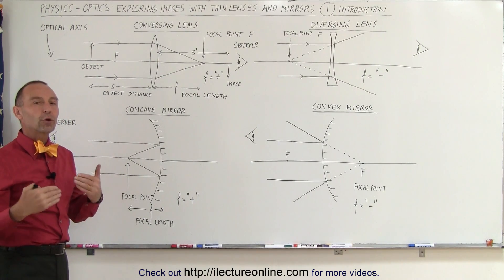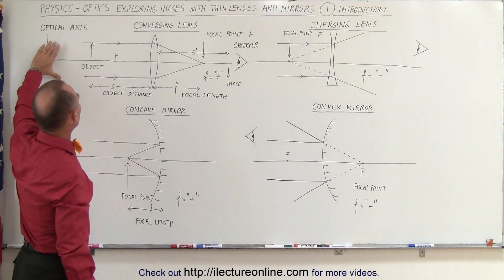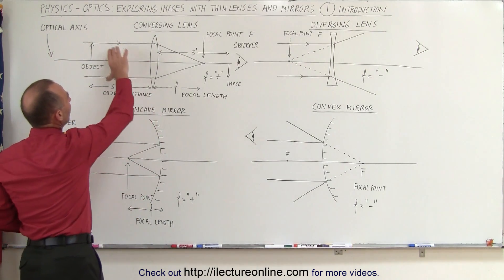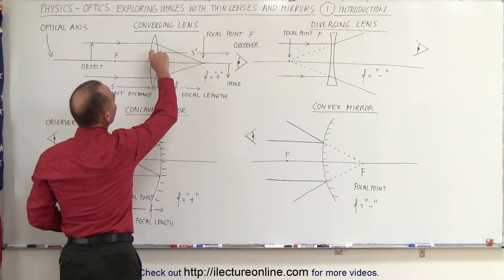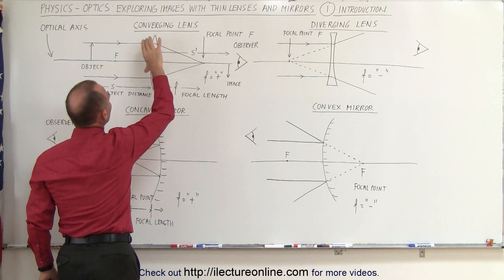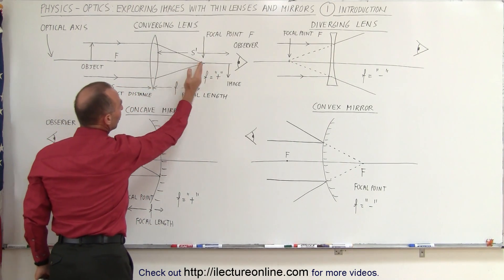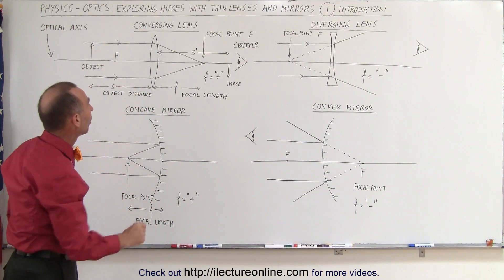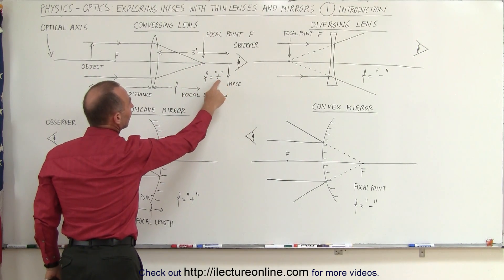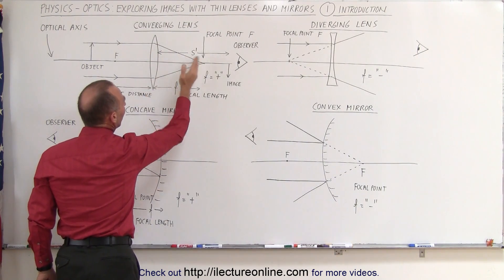How do we determine the focal points and the focal lengths of lenses and mirrors? We do that by imagining parallel rays of light moving from the left towards the lens or mirror. In the case of a converging lens, the rays will go through the lens and converge to a single point. Where parallel rays move through the lens and converge on the other side — that's called the focal point. The distance from the lens to that point is called the focal length. Since the focal point of a converging lens is on the other side of the lens, we call that a positive focal length.